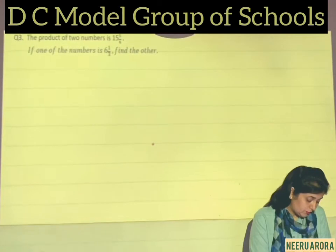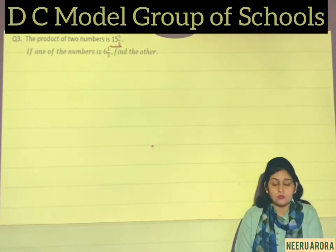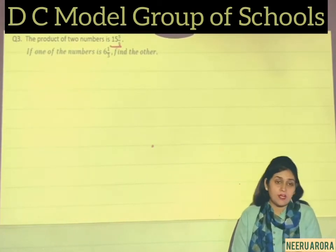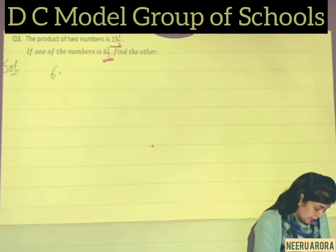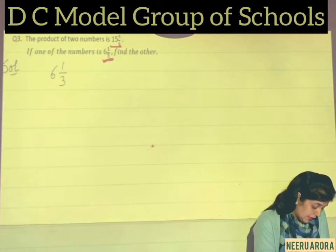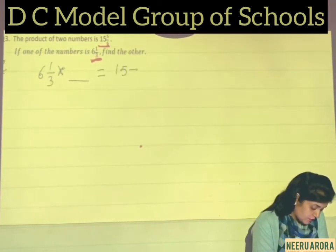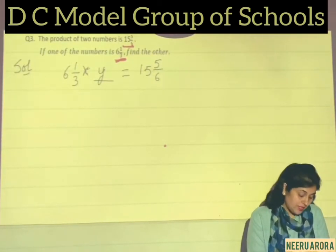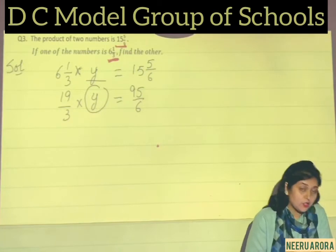Now let's come to the third word problem: the product of 2 numbers is 15 5/6. If one of the numbers is 6 1/3, find the other. One number is 6 1/3, and the product of the two numbers is 15 5/6. We don't know the second number — let's call it Y. Converting to improper fractions: 6 1/3 = 19/3. So 19/3 × Y = 15 5/6 = 95/6.